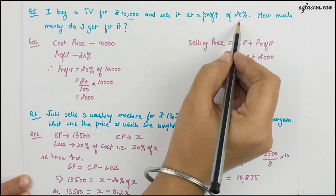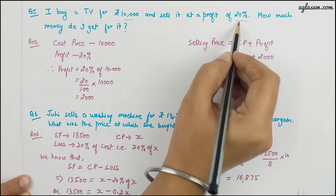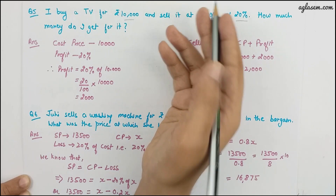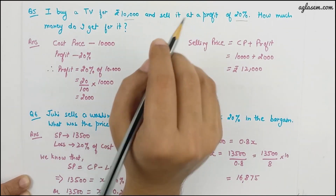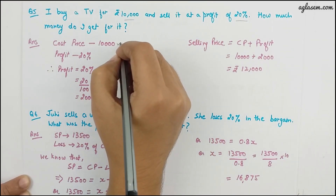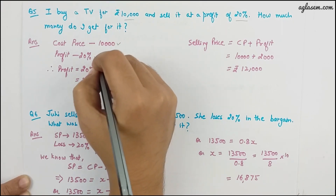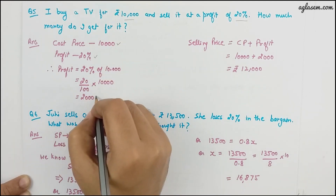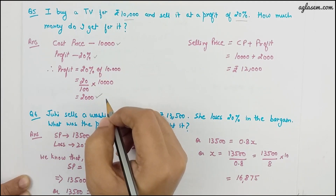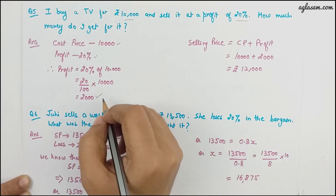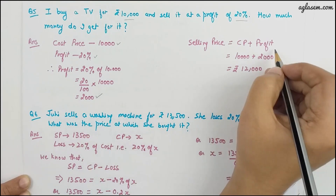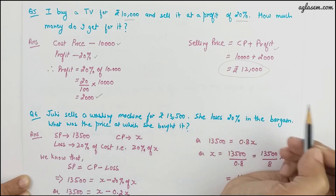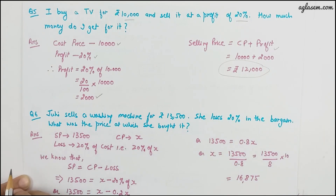Question 5: I buy a TV for 10,000 and sell it at a profit of 20 percent. The profit is 20 divided by 100 multiplied by 10,000, which equals 2,000 rupees. So the total selling price is 10,000 plus 2,000, giving 12,000 rupees.